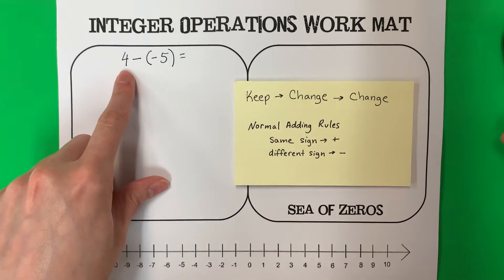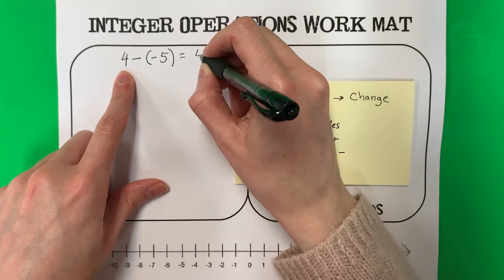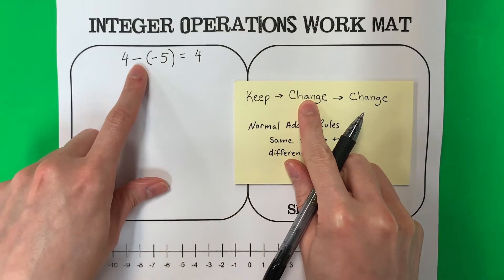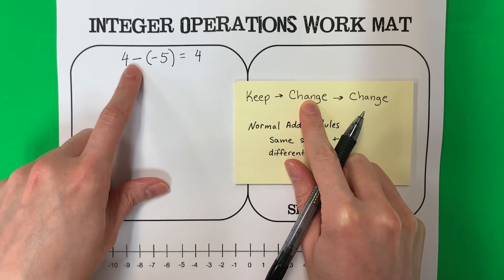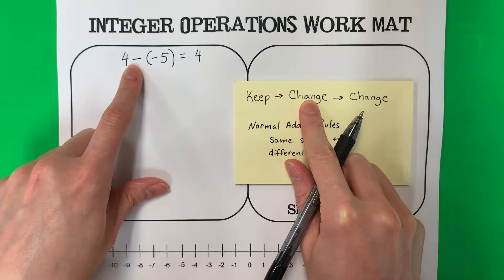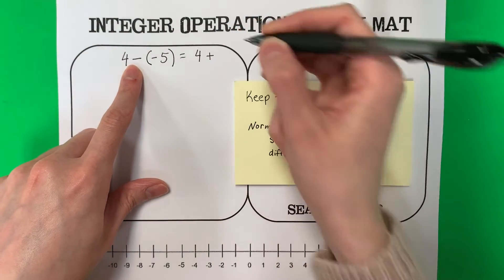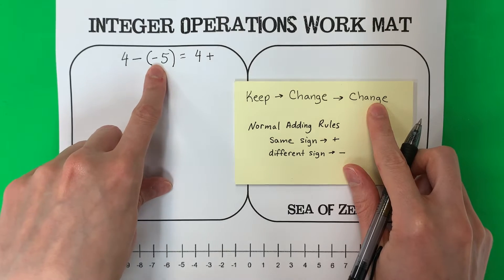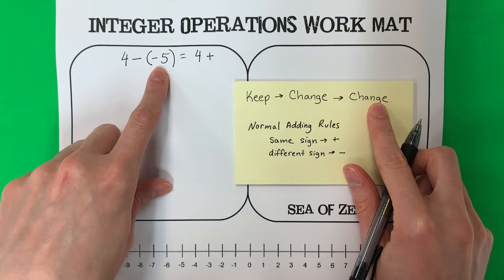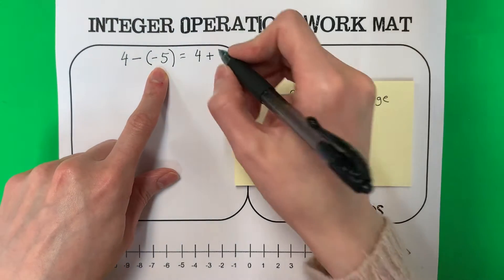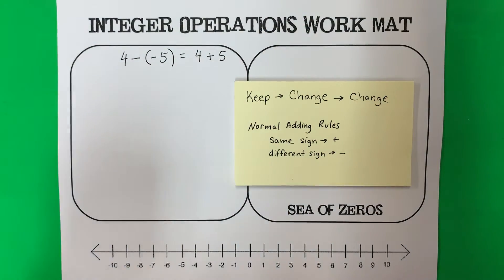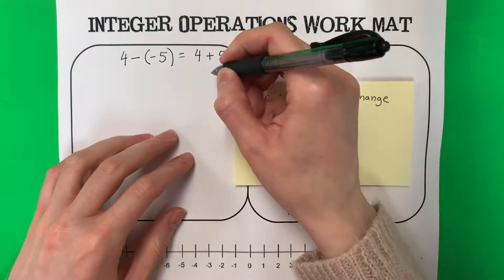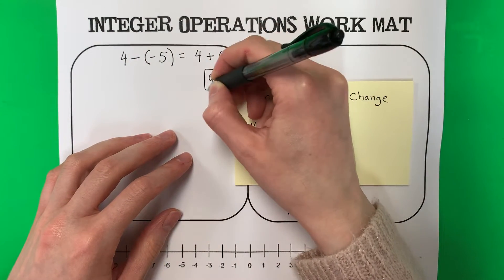Keep the first one the same, so 4 will stay the same. Then I'm going to change from minus — the opposite of minus is plus. And then change again: the opposite of negative is positive. So positive 5, or you could just write 5. Now you just do 4 plus 5. The answer is 9.